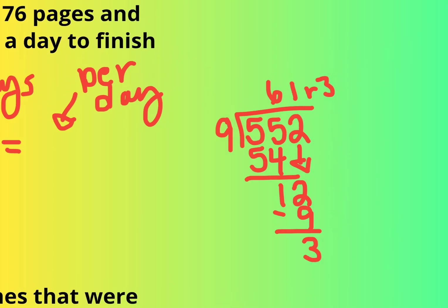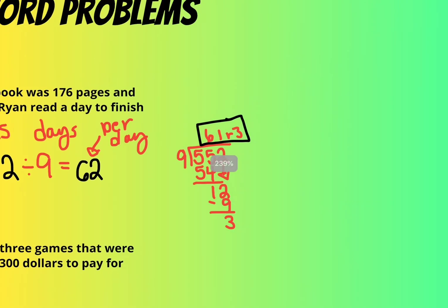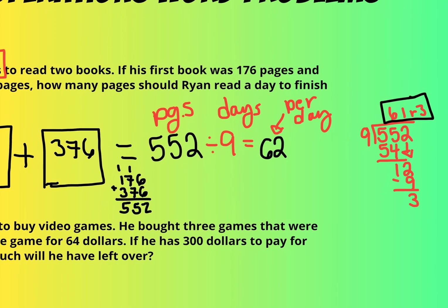Well, you can't really have a remainder of 3 pages. You have to just say that Ryan has to read at least 62 pages per day. Now, on the last day, he might only have to read like 50 or something because you can't really read a decimal of a page. So how many pages does he need to read a day? He needs to read 62 pages per day to make that work.